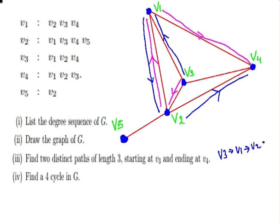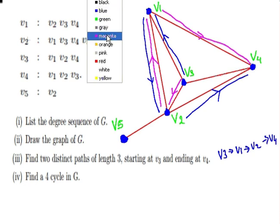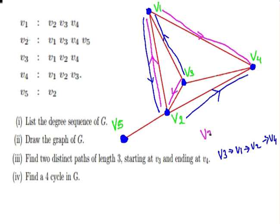The first case was V3 to V2 to V1 to V4. Okay, so that's two distinct paths of length 3, starting at V3 and ending at V4.